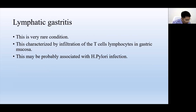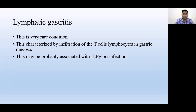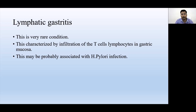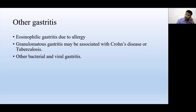Next is lymphocytic gastritis, where macrophages and lymphocytic cells migrate towards the gastric mucosa. The excessive presence of T-cells and lymphocytes in the mucosa causes gastritis. It is probably associated with H. pylori infection, as the infection may invoke inflammatory cells to come and act against H. pylori, and the overcrowding of lymphatic cells also produces inflammation of the gastric mucosa.